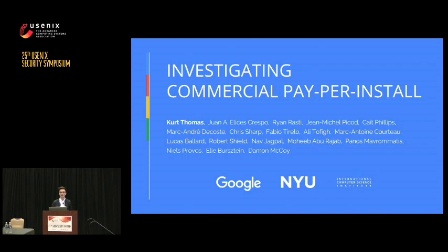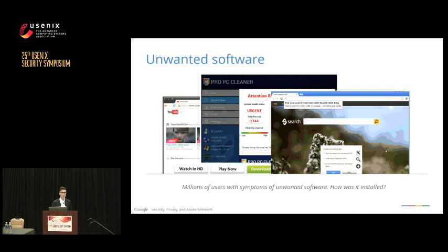For over two years now, we've been seeing millions of users exhibiting symptoms of unwanted software. These are things like ad injectors that inject new content onto YouTube, PC cleanup utilities that purport to identify thousands of errors on a user's machine and offer a subscription fee to clean it up, and browser settings hijackers that modify the default search engine and replace it to sell that traffic. We received over 100,000 user complaints related to these types of symptoms. So we know it's a nuisance to users, but we didn't really understand how that software is actually getting onto the victim's machine in the first place.